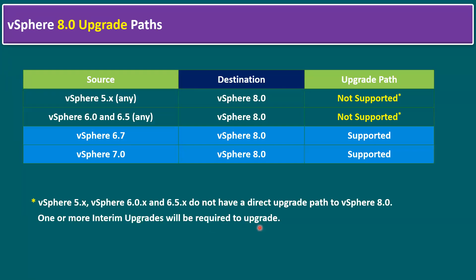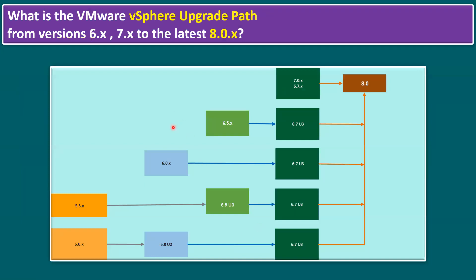Let me show you on the slide the VMware vSphere upgrade path from versions 6.x and 7.x to the latest version. 6.x covers 6.0, 6.5, 6.7, and any latest patches. 7.x covers 7.0, Update 1, Update 2, Update 3, and so on. 8.0.x covers 8.0 Update 1 and Update 2. As we understand, if you have a 7.0 series or 6.7 series environment, VMware says it's directly supported to upgrade to vSphere 8.0 — that is the first option, a direct upgrade.